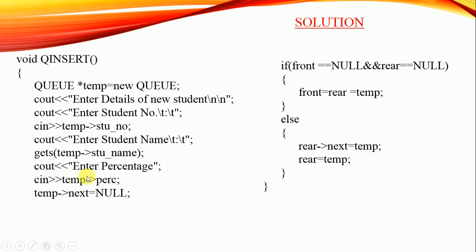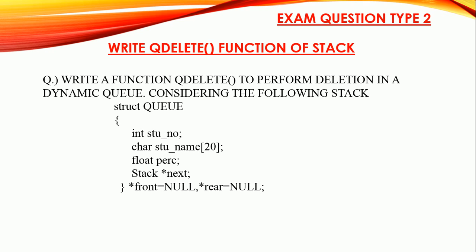So while performing insertion, first create a blank temporary node, take input of all structure elements from the user, and set the link part to null. For the insertion logic: if front == NULL and rear == NULL, the queue is empty, so make both front and rear point to temp. Otherwise, set rear->next = temp to link the new node at the end, then update rear = temp to shift rear to the newly inserted node.